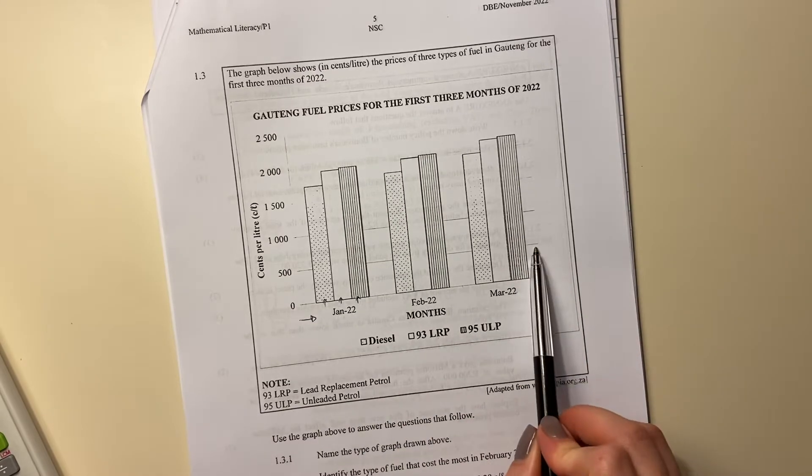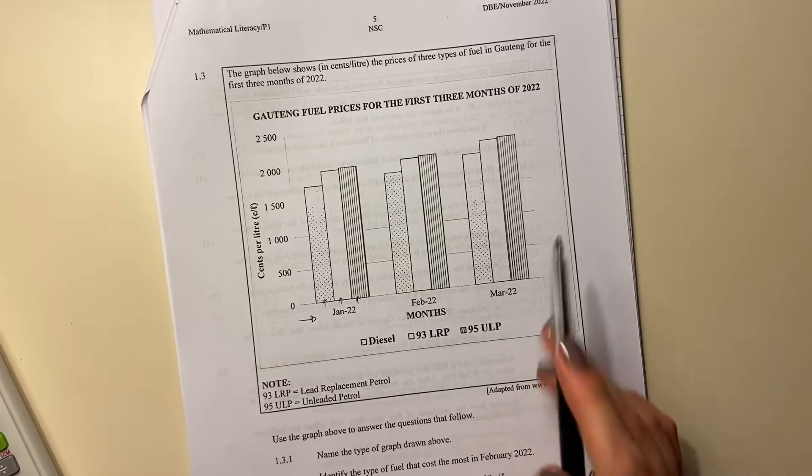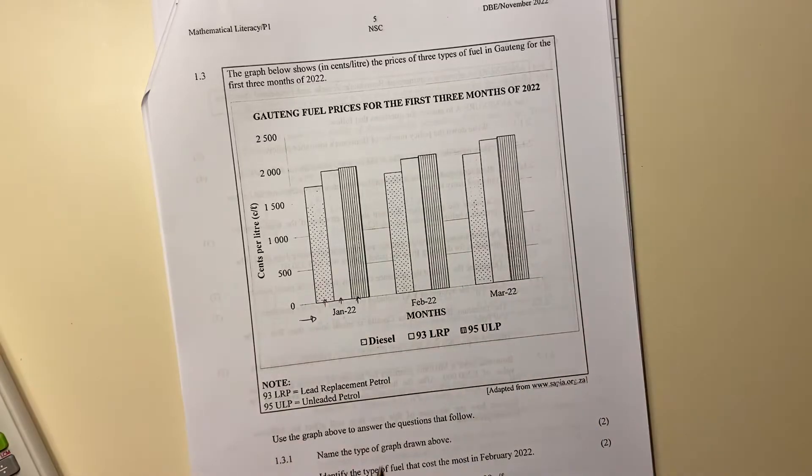So in all of them, you can see that diesel is cheapest. And in all of them, you can see that 95 unleaded is the most expensive. And then the 93 is kind of in between. So that's sort of the interpretation you should be able to pull from this.